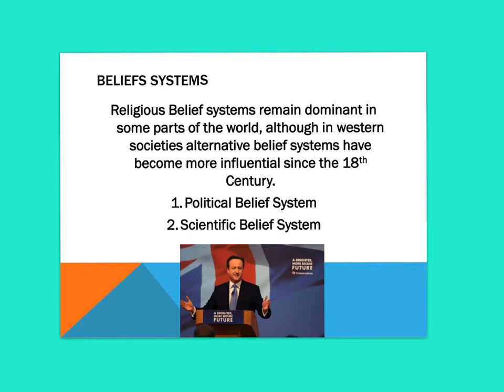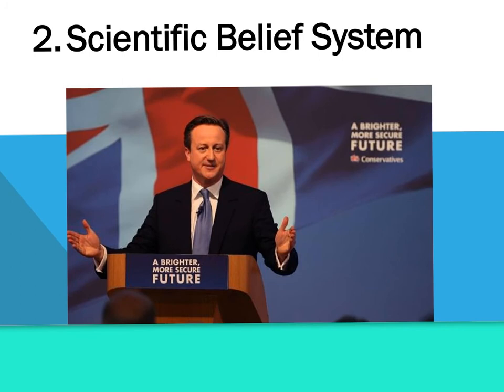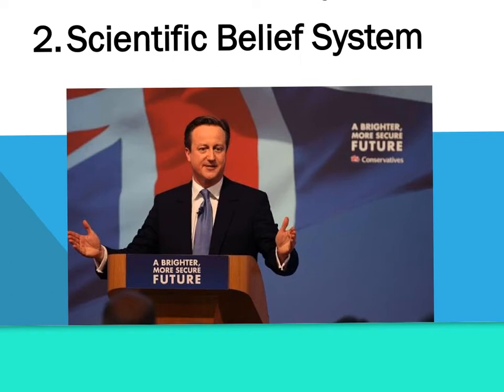Religious belief systems remain dominant in some parts of the world, although in Western societies alternative belief systems have become more influential since the 18th century, including political and scientific belief systems. Political belief systems are based on views about how society should be organised and do not have a supernatural element to them. Nevertheless, political beliefs can be so strongly held that they lead to violence, wars, and the persecution of social groups. Examples include belief in the free market capitalism — sometimes called neoliberalism — Marxism, socialism, and liberalism.